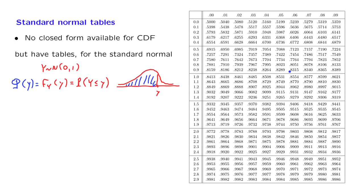Let us see how we use this table. Suppose we're interested in phi of 0, which is the probability that our standard normal takes a value less than or equal to 0. Well, by symmetry, since the PDF is symmetric around 0, we know that this probability should be 0.5. Let's see what the table tells us. 0 corresponds to this entry, which is indeed 0.5.